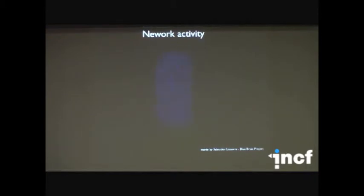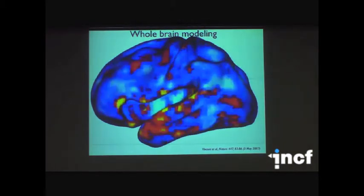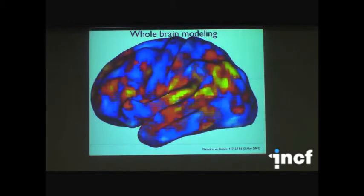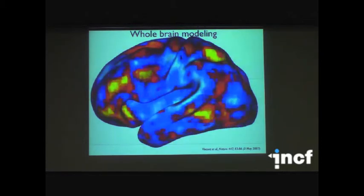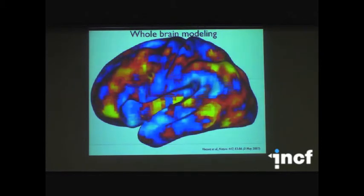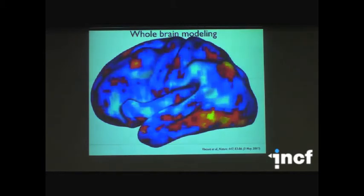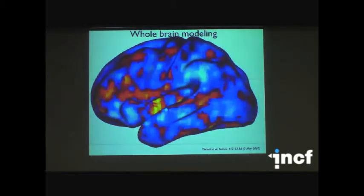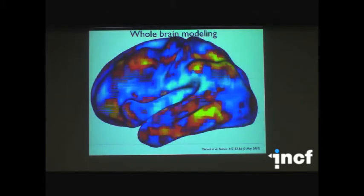The goal is to keep going and be able to integrate data all the way to whole brain scale. This is actually fMRI data of spontaneous activity in the brain, but ultimately we should be able to achieve models at this scale that really capture the impact of a single gene mutation and its effect on whole brain electrical activity.